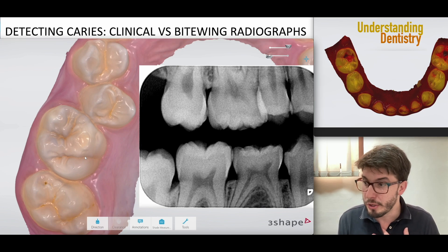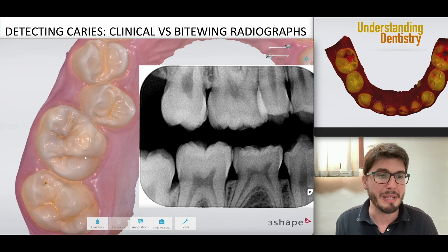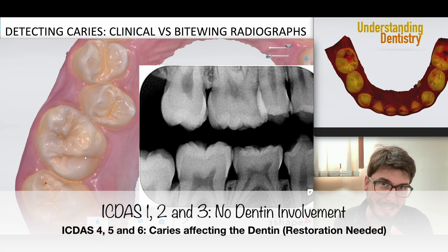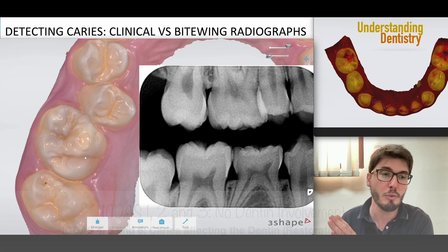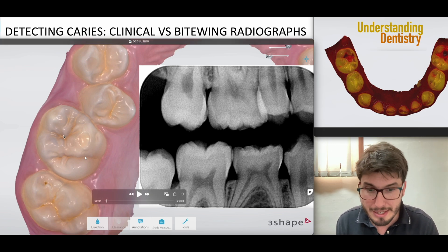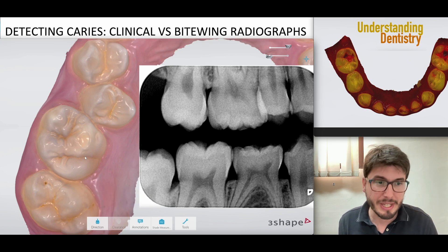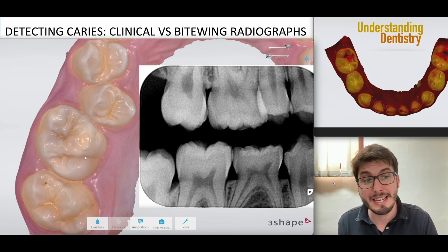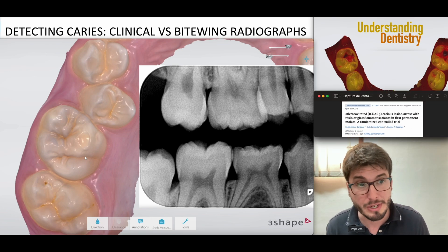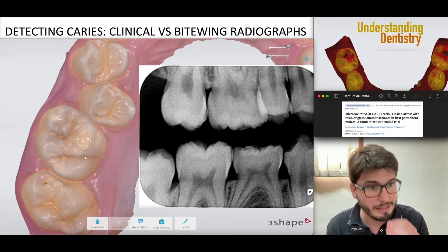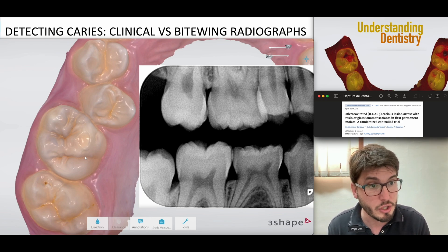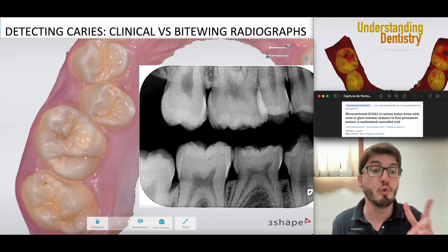It's very important to know that the threshold between dentine involvement and enamel-only involvement is ICDAS 3 and 4. Until ICDAS 3, there is no dentine involvement. There is even an article that proved we can use sealants on ICDAS 3 lesions — I'm adding this reference. It's a very nice randomized clinical trial.